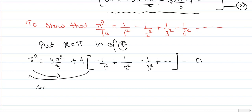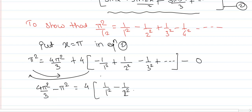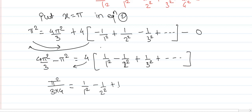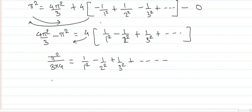Now simplify. Shifting terms: 4π²/3 − π² = 4[1/1² − 1/2² + 1/3² − …], giving π²/3 = 4[1/1² − 1/2² + 1/3² − …]. Dividing both sides by 4: π²/12 = 1/1² − 1/2² + 1/3² − 1/4² + … up to infinity, which is our required result.